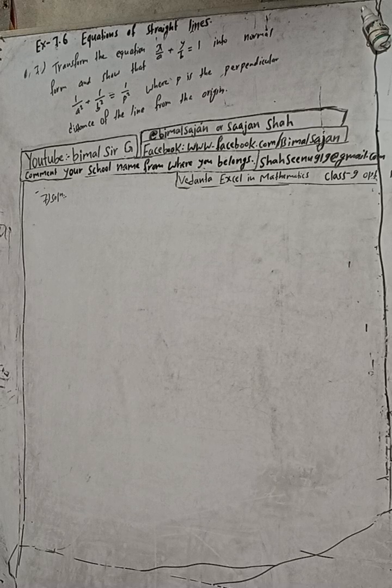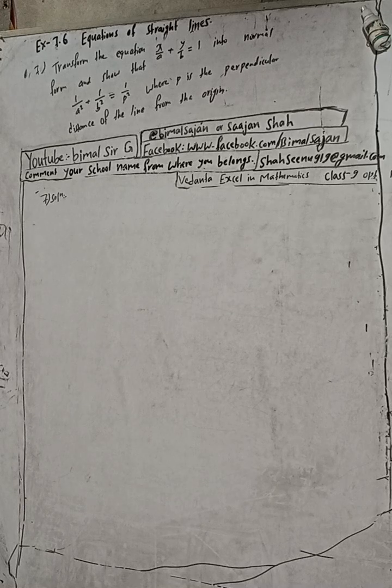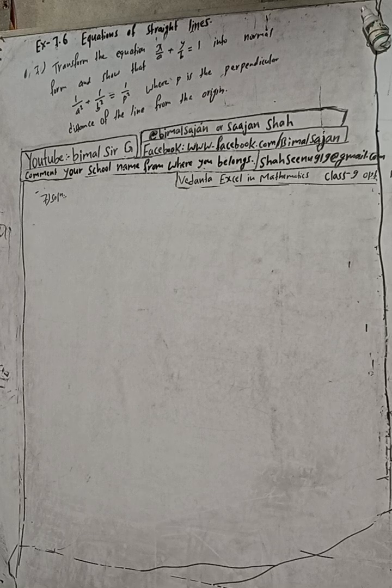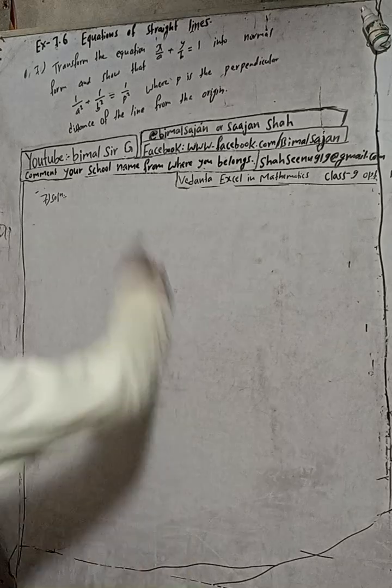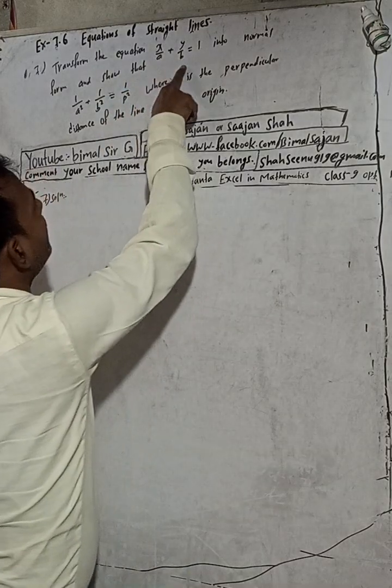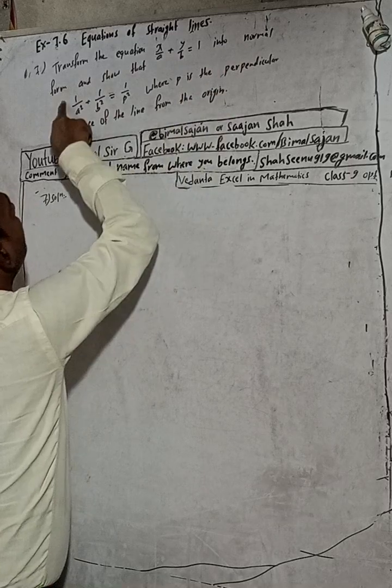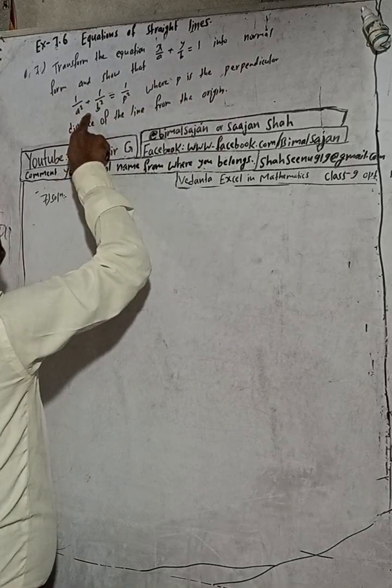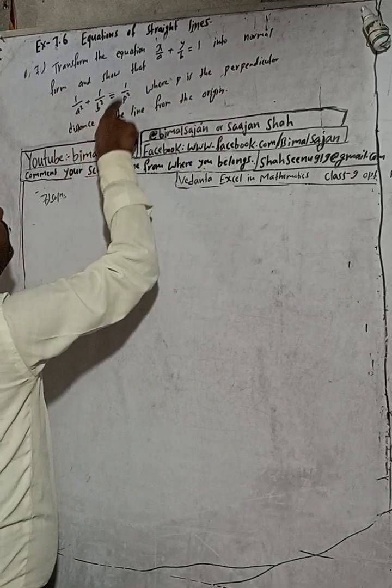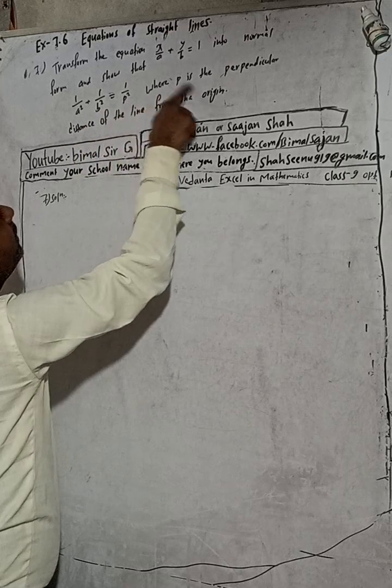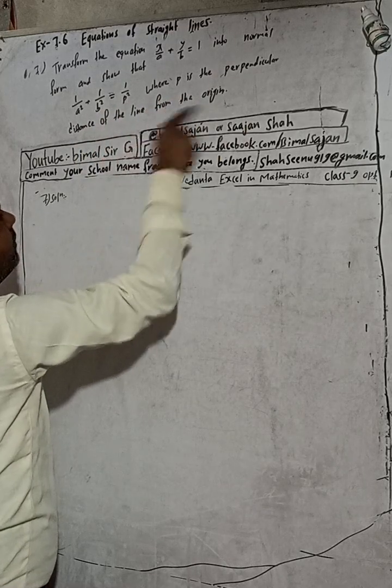This is question number 7, exercise 7.6, equations of straight lines, class 9 optional mathematics. The question is transform the equation x/a plus y/b equals 1 into normal form and show that 1/a² plus 1/b² equals 1/p², where p is the perpendicular distance of the line from the origin.